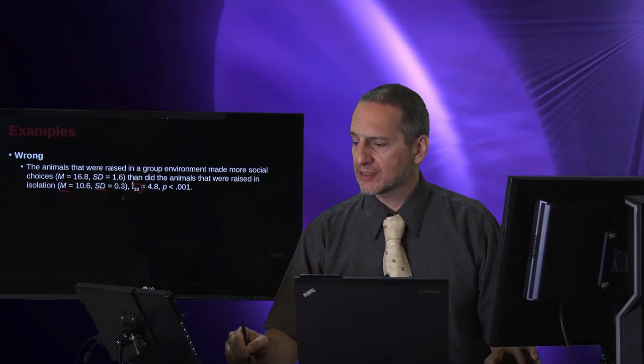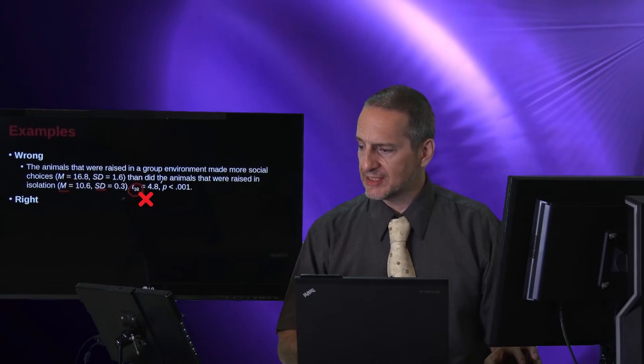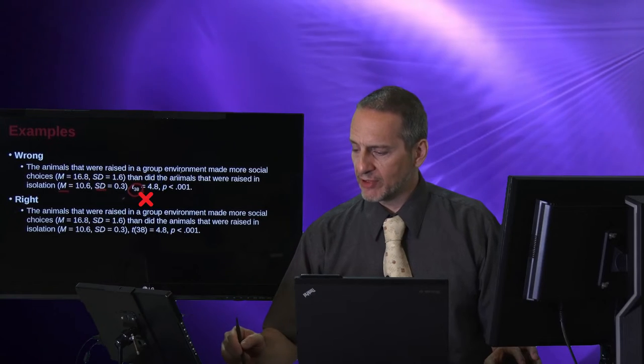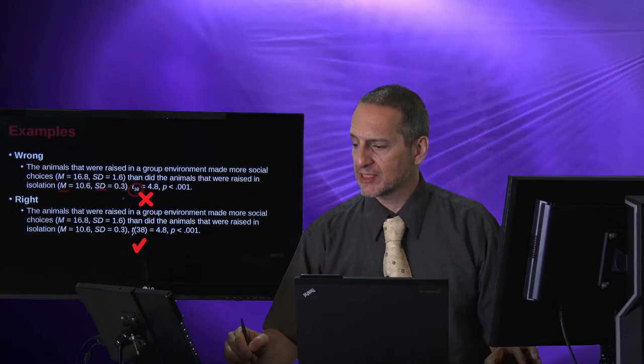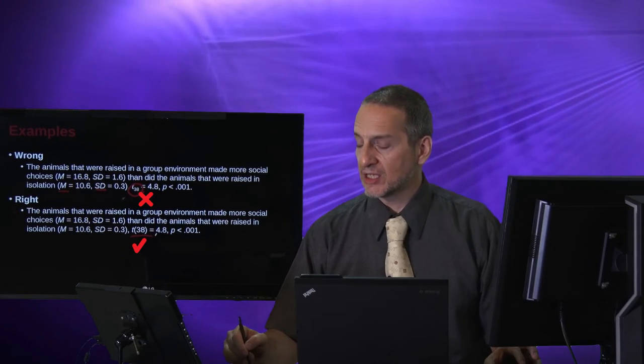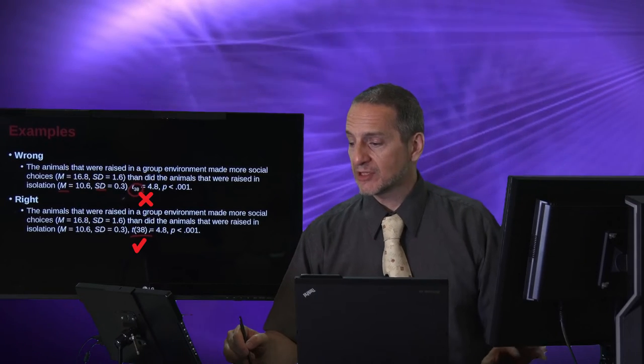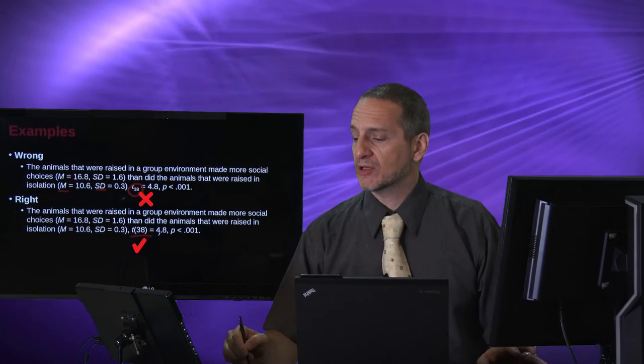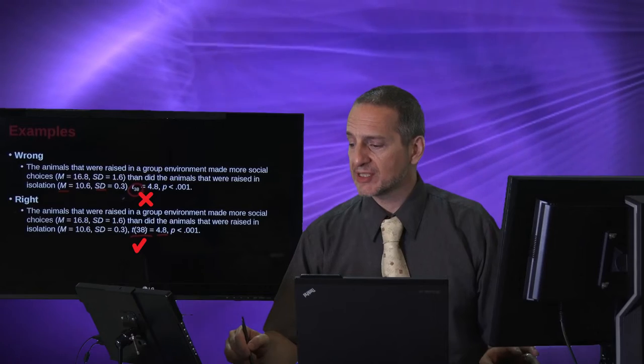But here what we have is this subscript for the t-test, which the correct way to write that would be t parentheses 38, meaning the degrees of freedom related to the sample size. So here's the t-test. So if I want to look it up in a table, that's 38, but you don't use a subscript.